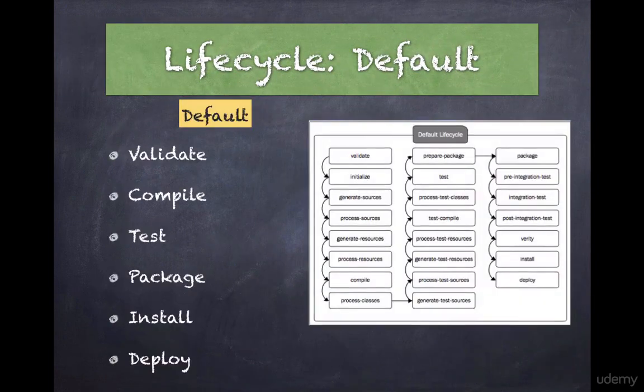Maven follows a well-defined build lifecycle when it builds, tests, and distributes an artifact. The lifecycle constitutes a series of stages or steps that get executed in the same order, independent of the artifact being produced. Maven refers to the steps in a lifecycle as phases.